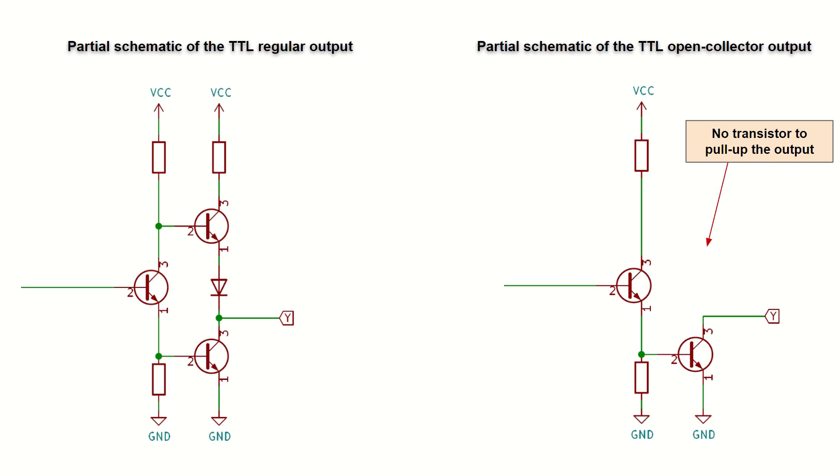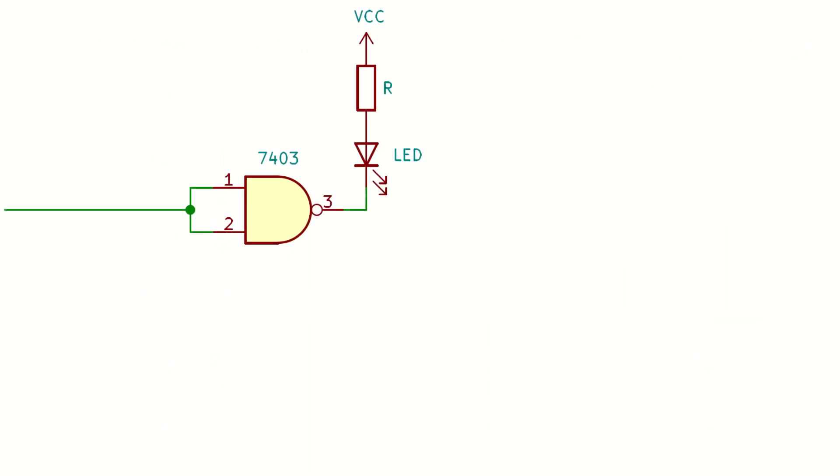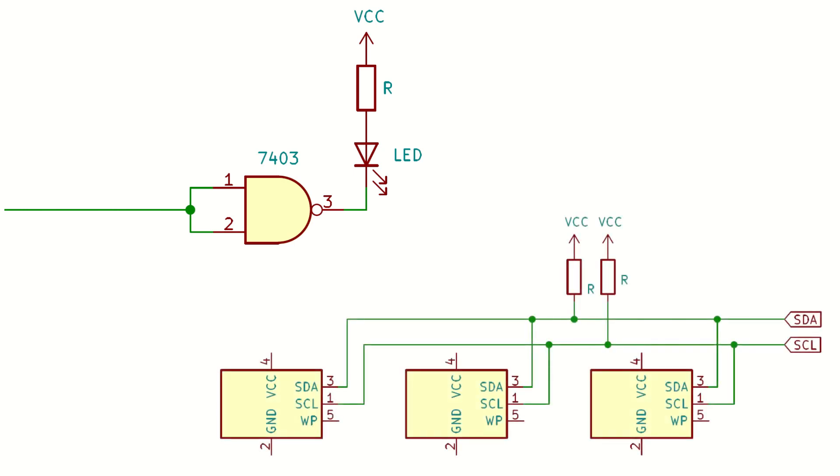This kind of output is usually used to drive electronic components other than logic gates, for example LEDs. It also allows more than one device talking on the same line, like for example in I2C protocol. This usage often requires a pull-up resistor to set the logical state when all the outputs are in the high impedance state.